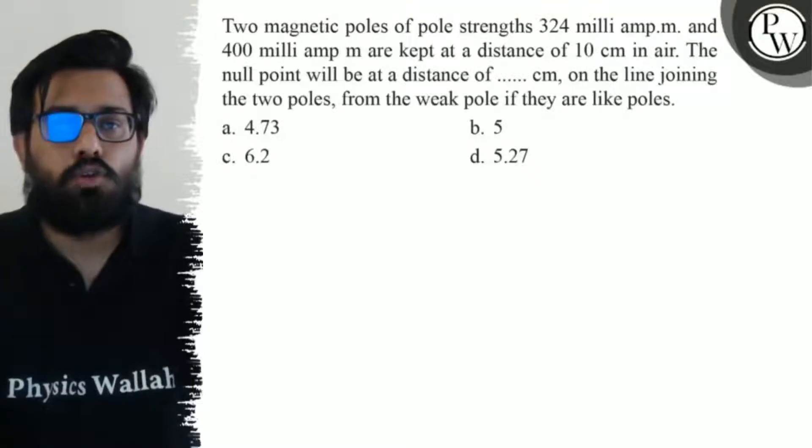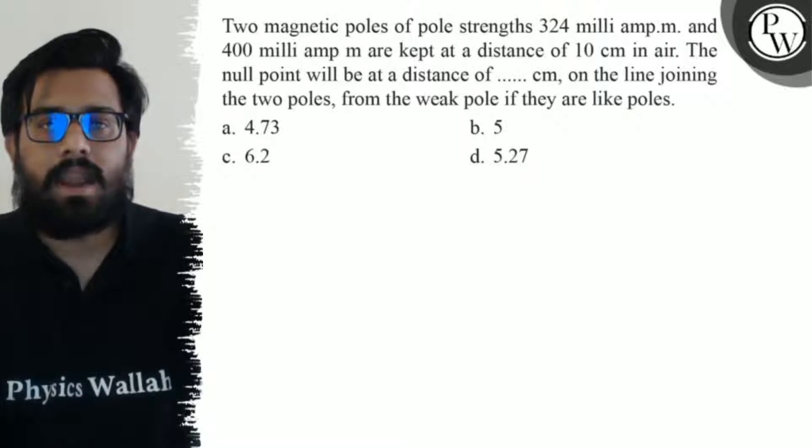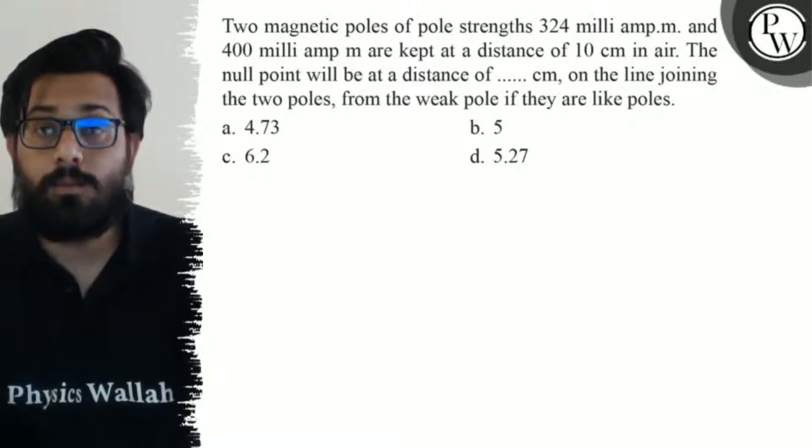Hello Bacho. So let's see the question. Two magnetic poles of pole strength 324 milliampere meter and 400 milliampere meter are kept at a distance of 10 centimeter in air. The null point will be at a distance of dash centimeter on the line joining the two poles from the weak pole if they are like poles.